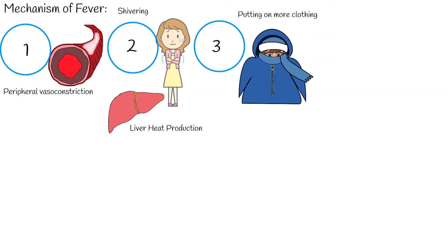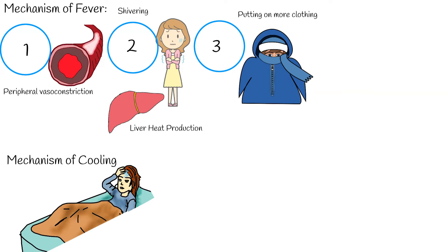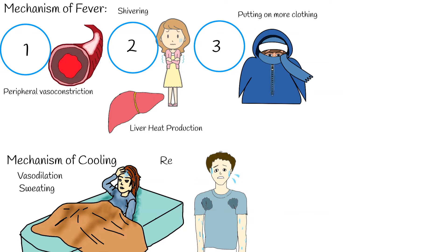When a person takes antipyretic medication, the hypothalamus also regulates the downward process. Sweating and vasodilation increase heat loss, and behavioral changes like removal of clothes facilitate the heat loss process.